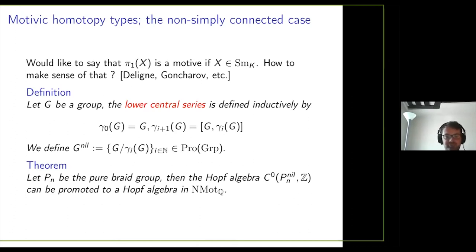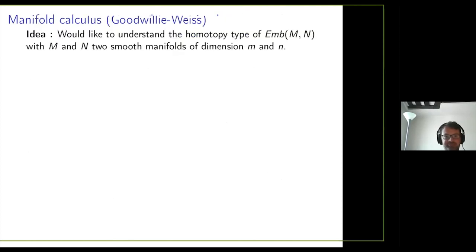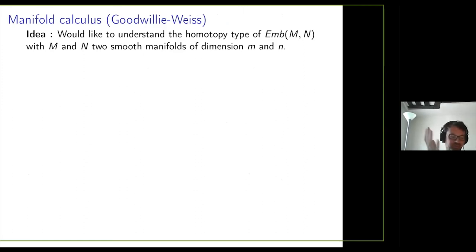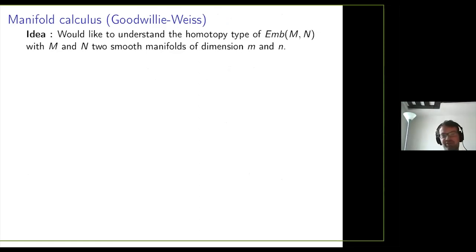It's not quite pi_1 of X that has the structure of a motive, but this Hopf algebra, which is the best nilpotent approximation to my group. That's all I wanted to say about motives. Now I'm going back to knots. Recall my main theorem was about giving the space of knots a motivic structure. I want to say first a few words about manifold calculus, because in my main theorem I had this mysterious T-infinity.